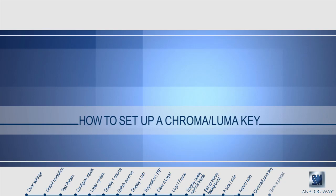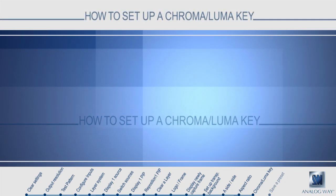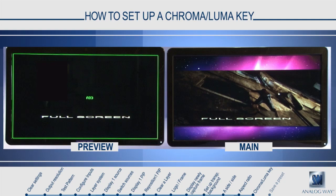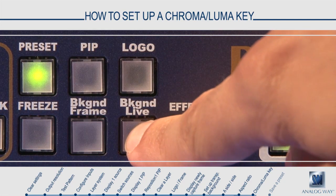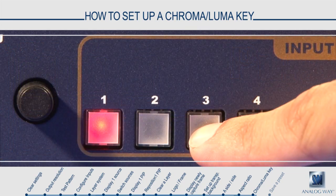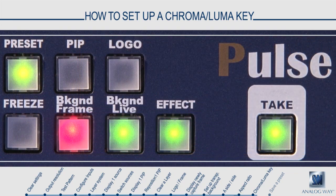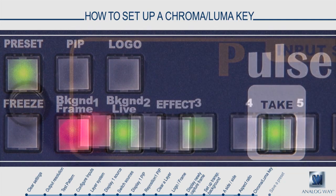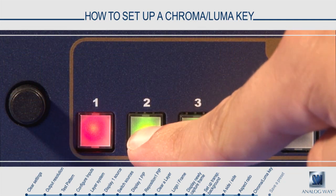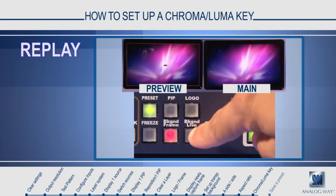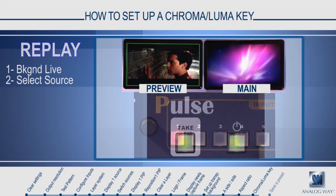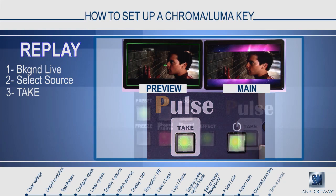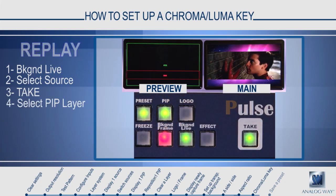How to set up a chroma or luma key. To set up a chroma or luma key, you will need to use two layers. The background live layer will contain the source underneath, and the PIP layer will contain the source above, usually your text. After configuring the chroma and luma key settings, you will be able to select the PIP layer, revealing only your text. You can also resize and position the PIP layer so that it appears exactly how you need it.